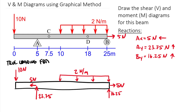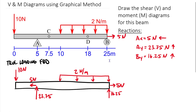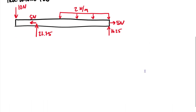This is our true loading free body diagram. The key thing that differentiates a true loading FBD from an equivalent loading FBD is whether the 2 N/m distributed load is represented as a distributed load — which it should be — versus a point load, which it should not. The distributed load and the point load have externally equivalent forces, but we are looking internally to this beam.